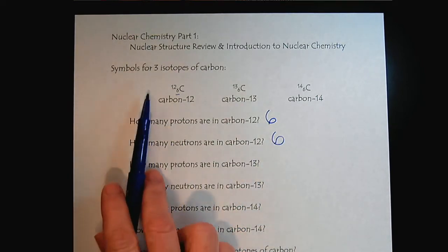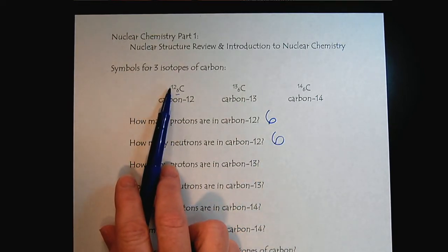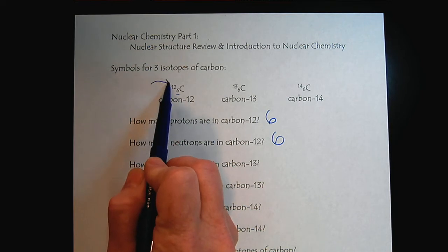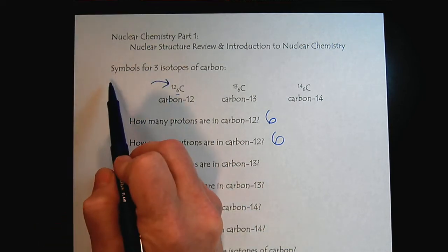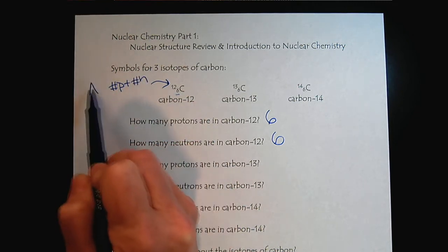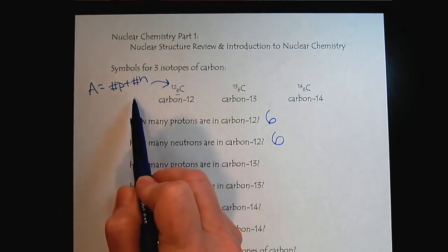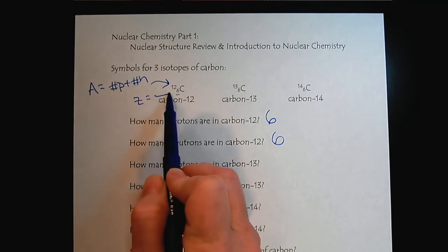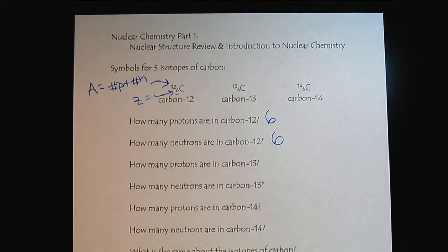We found the neutrons because remember that this top value here, that's the number of protons plus the number of neutrons. And then here we have Z. And I think I've given away the answers already to the later questions.